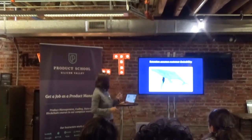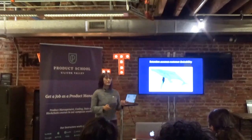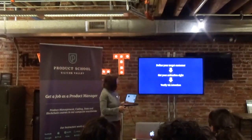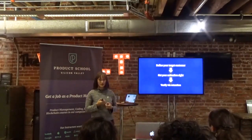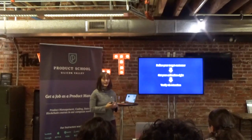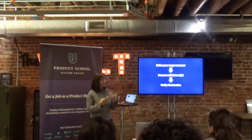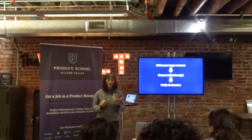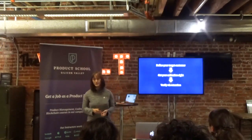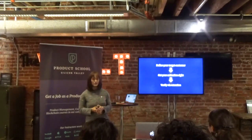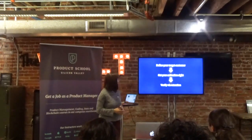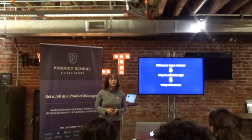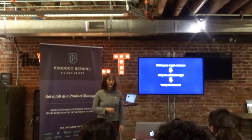So I propose flipping it — rather than starting at retention, start at the beginning. First define your target customer, then get your activation right. The title of this talk is how to optimize activation as a PM, and I believe it is the most important step to optimize in the user growth funnel. Then you verify whether you've gotten your activation right with retention. Retention is the effect of proper activation.